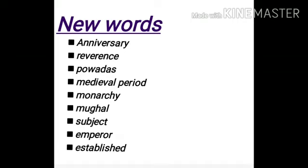Next is monarchy — M-O-N-A-R-C-H-Y — monarchy. Monarchy means a country ruled by the king and queen, not by the prime minister or president. Next is mughal — M-U-G-H-A-L — mughal. Mughal means a people from a Muslim background.